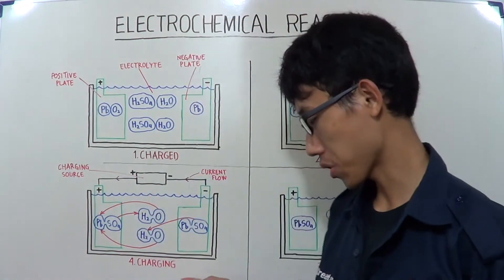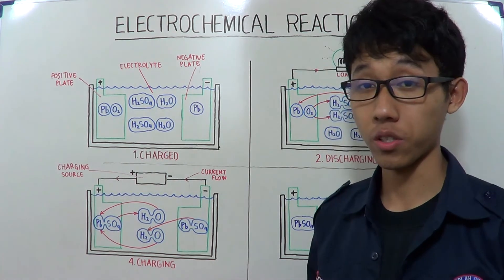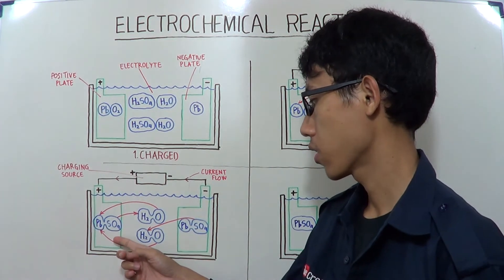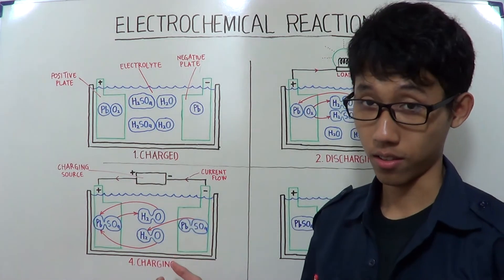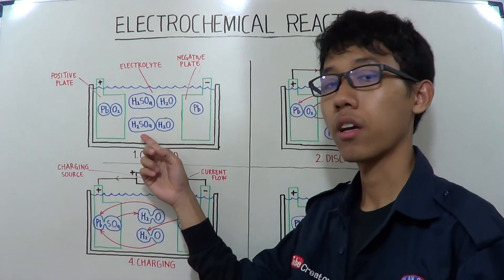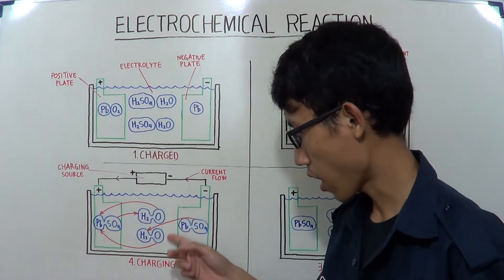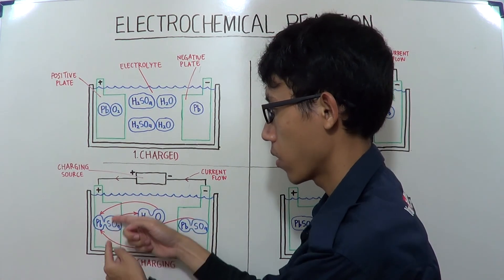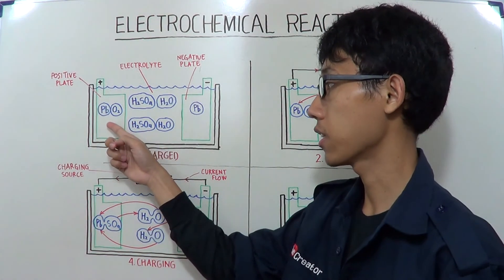The last stage is the charging stage. In the charging stage, the chemical action is reversed. So the SO4 or sulfate combines with H2 or hydrogen to become H2SO4 or sulfuric acid. And the free oxygen combines with the lead on the positive plate to form lead dioxide.